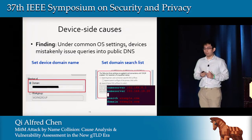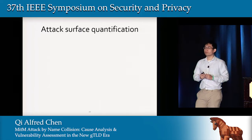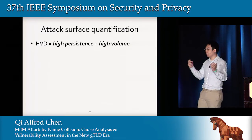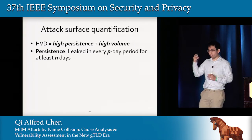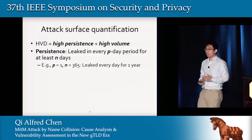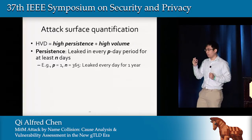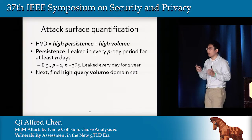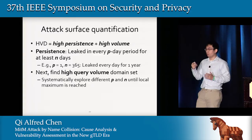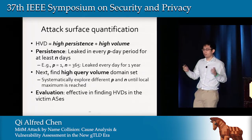Now that we understand why leakage happens, we apply attack surface quantification to systematically assess vulnerability status. Remember, HVDs are defined to have both high leakage persistence and high leakage volume. We define persistence as leakage in every P-day period for at least N days — for example, P=1 and N=365 means leakage every day for one year, showing very high persistence. We then systematically explore different P and N values until a local maximum is reached to find the high query volume domain set.